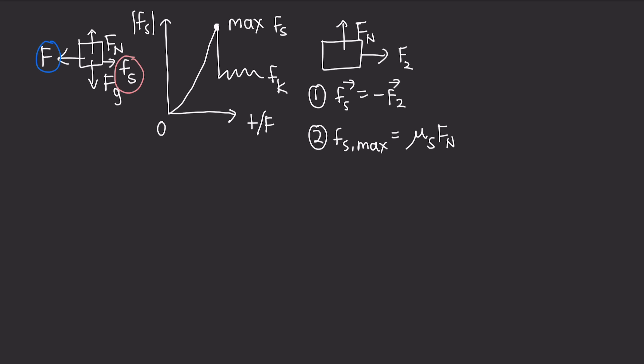If the body begins to slide along the surface, that leads us to our third property. The magnitude of the frictional force will decrease to the kinetic friction value, which is given by a similar equation, μk times fn, where in this case, μk is the coefficient of kinetic friction. And during the sliding, this frictional force will oppose the motion.